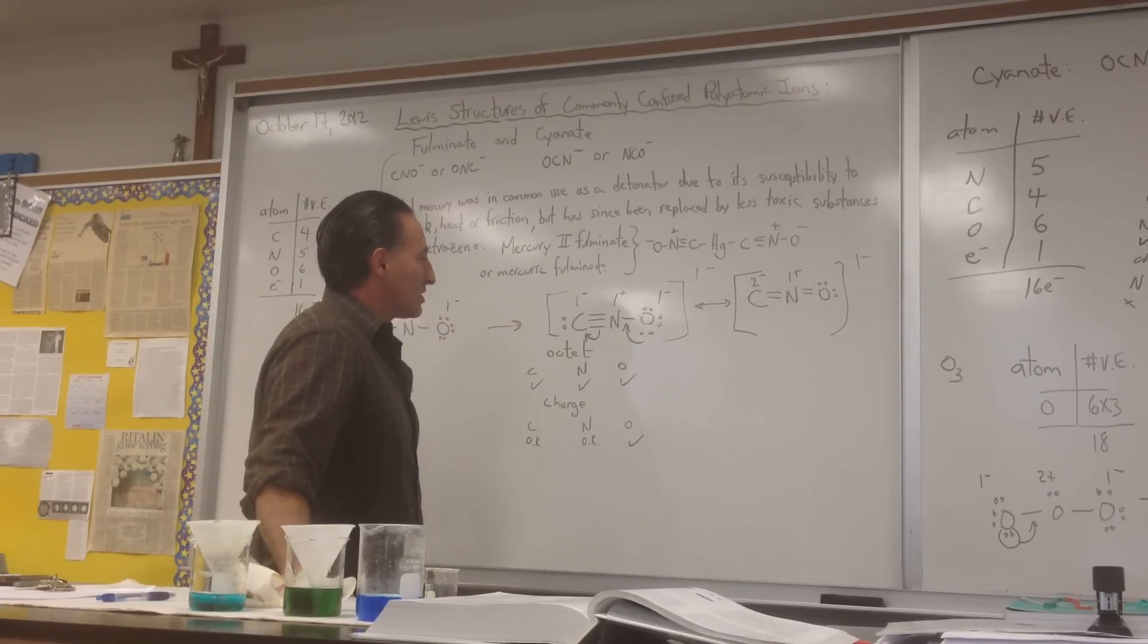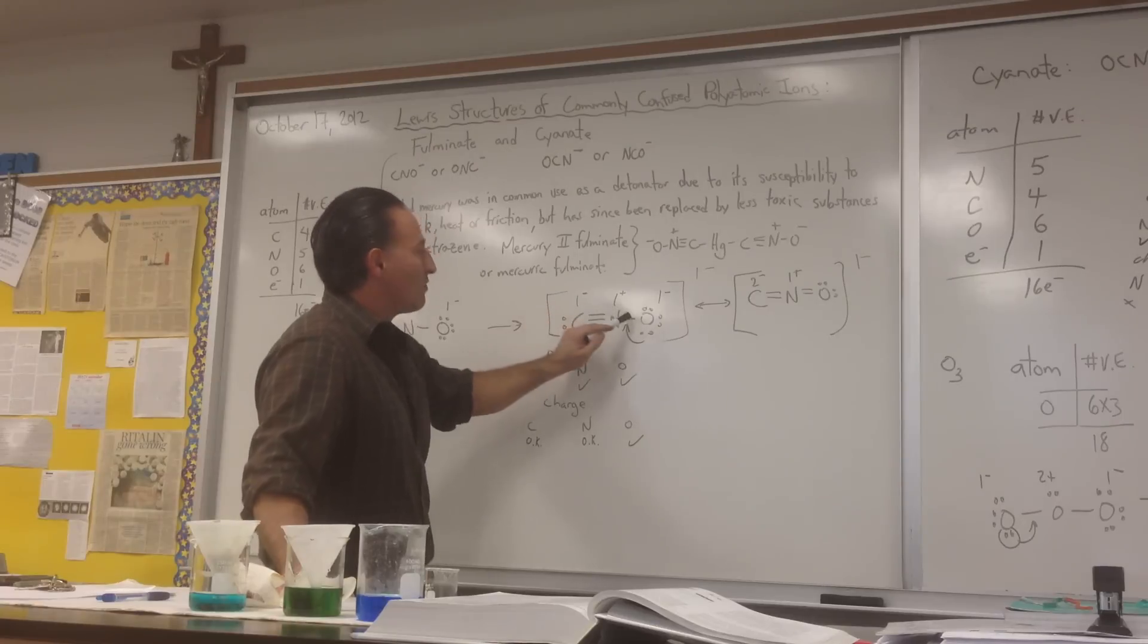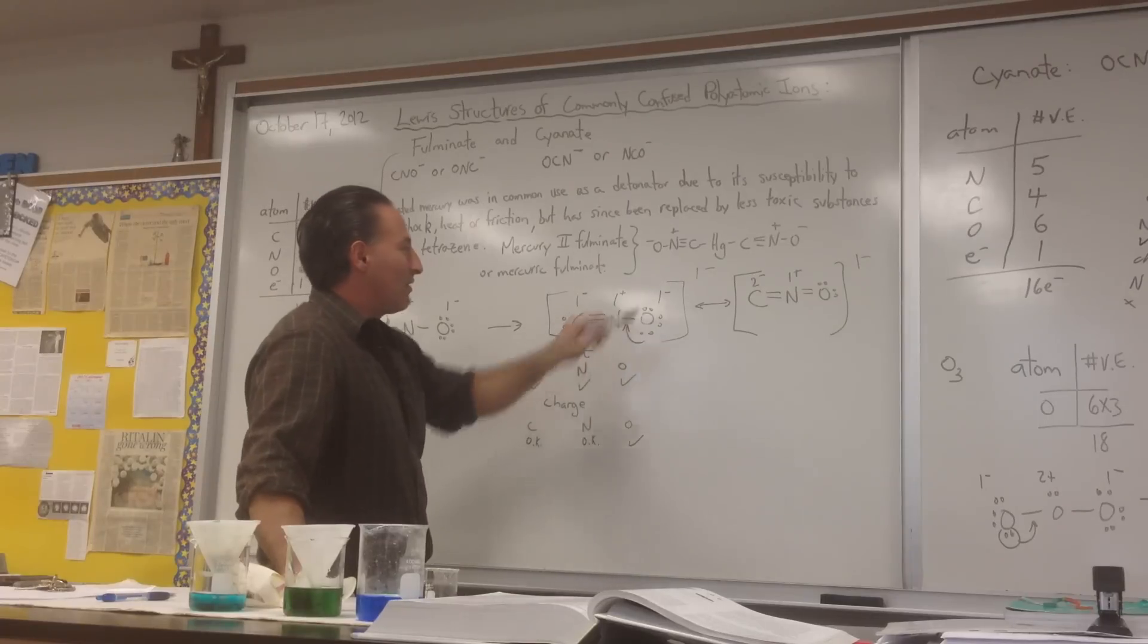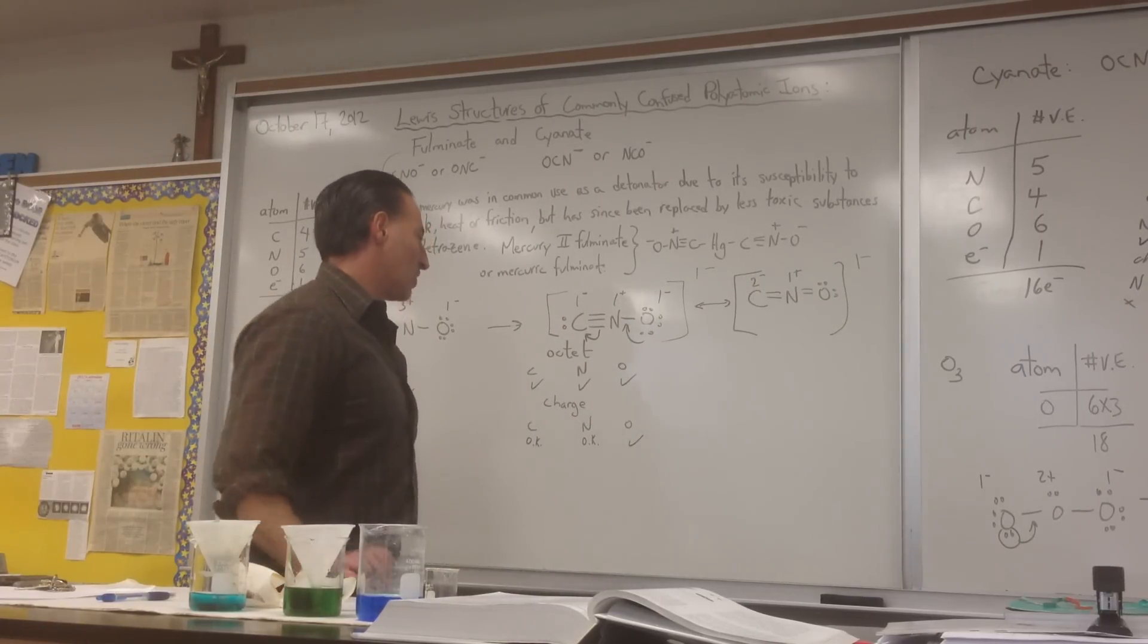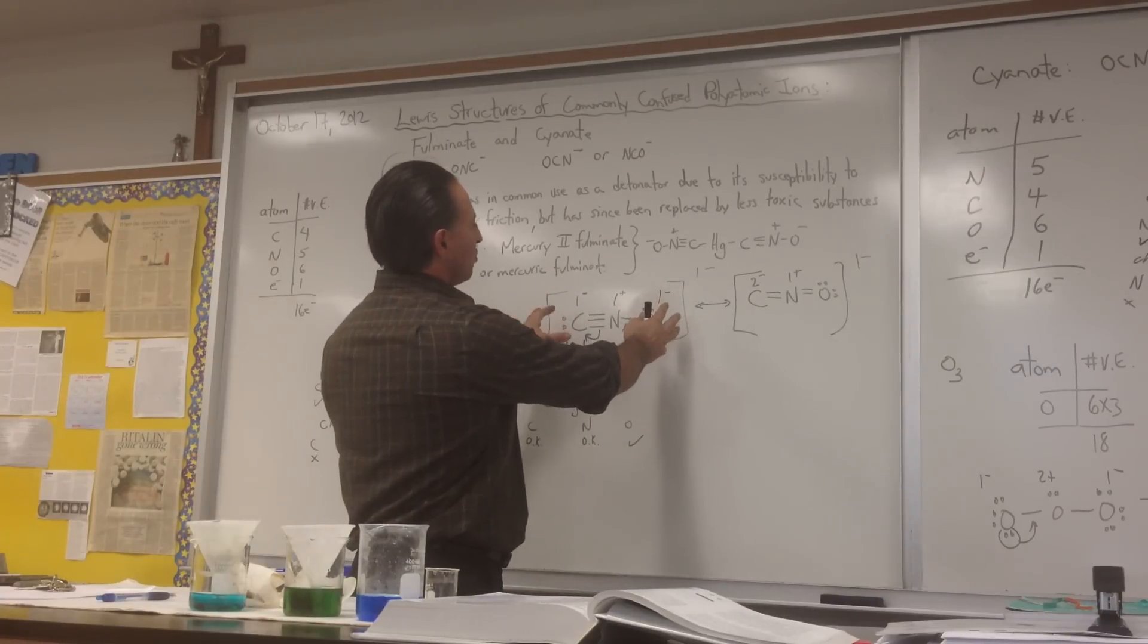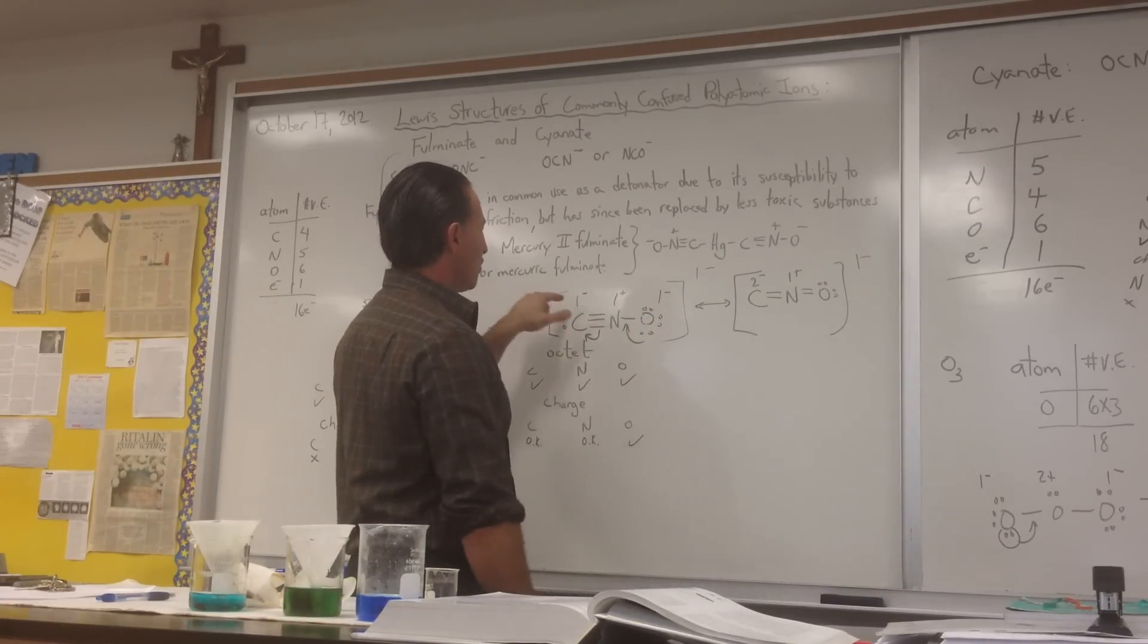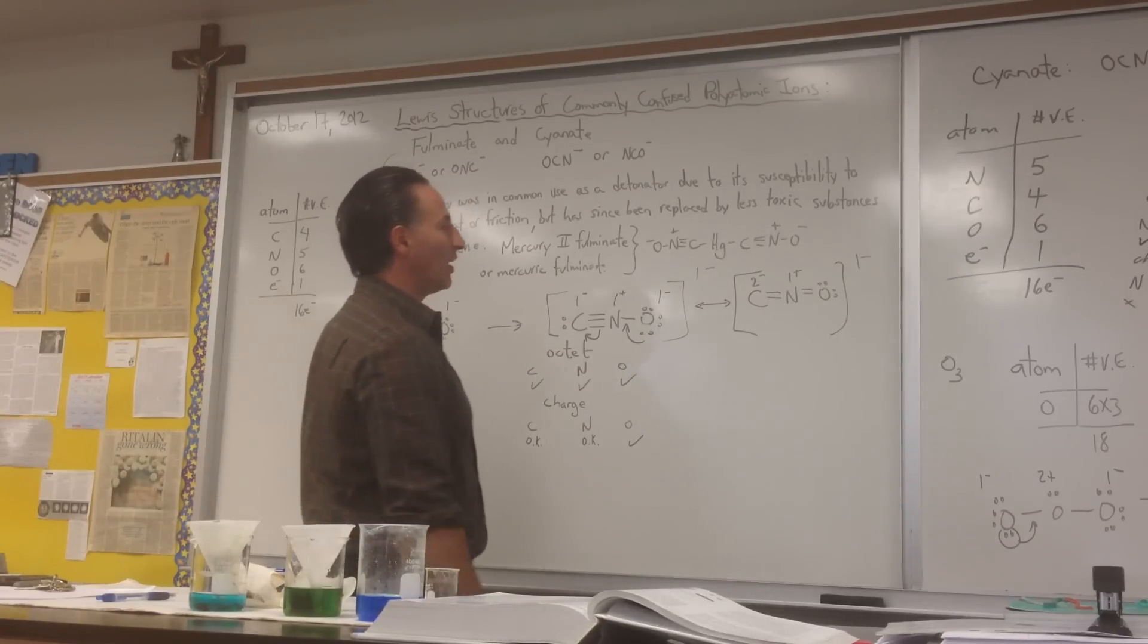Nitrogen, which wants to possess 5 electrons because it's a group 15 element, actually possesses 1, 2, 3, 4, and therefore it has a plus 1 charge, and oxygen would have a minus 1 charge still. Overall, with the molecule drawn this way, you'd have a formal charge of negative 1 on the carbon, a formal charge of plus 1 on the nitrogen, and a formal charge of minus 1 on the oxygen. The molecule has to have an overall charge of minus 1.